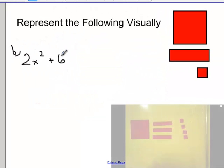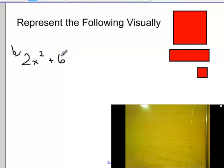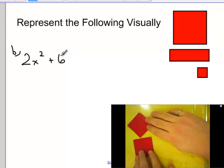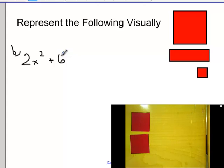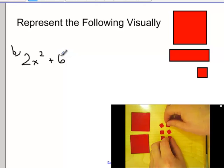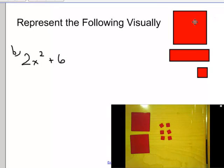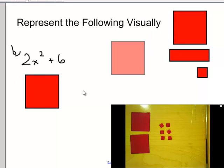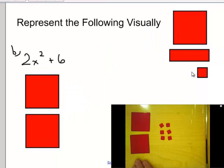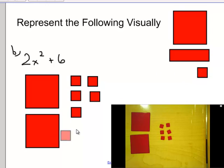Let's try another one: 2x squared plus 6. I could use two x squared tiles and six individual units to represent 2x squared plus 6. So again in your notes, you could draw two x squared tiles and six units to represent this expression.